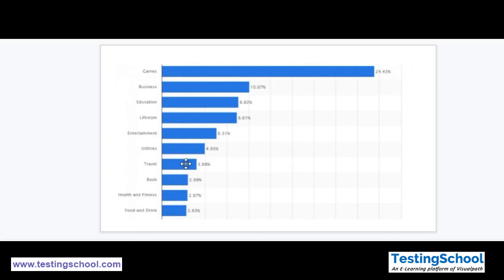We have covered different categories and types of applications, but we just touched on the most general ones. As mentioned, there are hundreds of sports, health, and fitness apps fitting into the lifestyle section, and digital books are just one among thousands in education and entertainment.